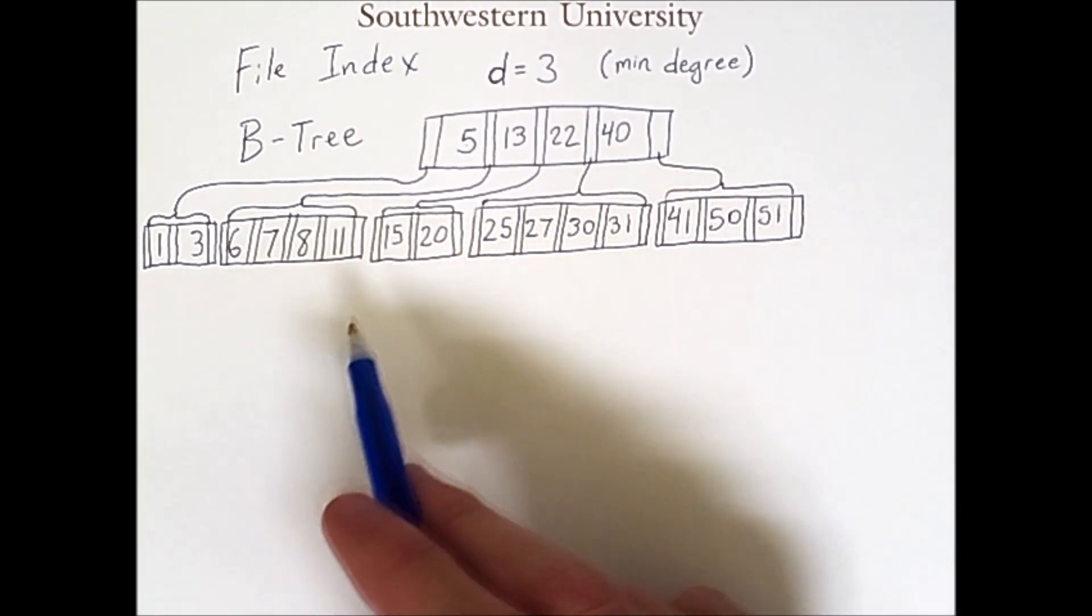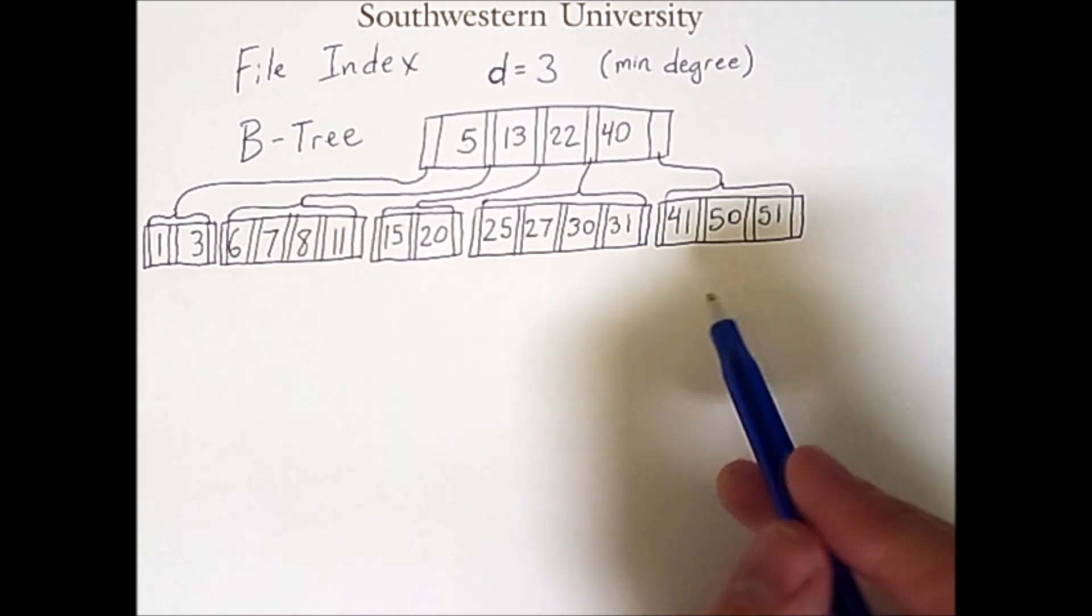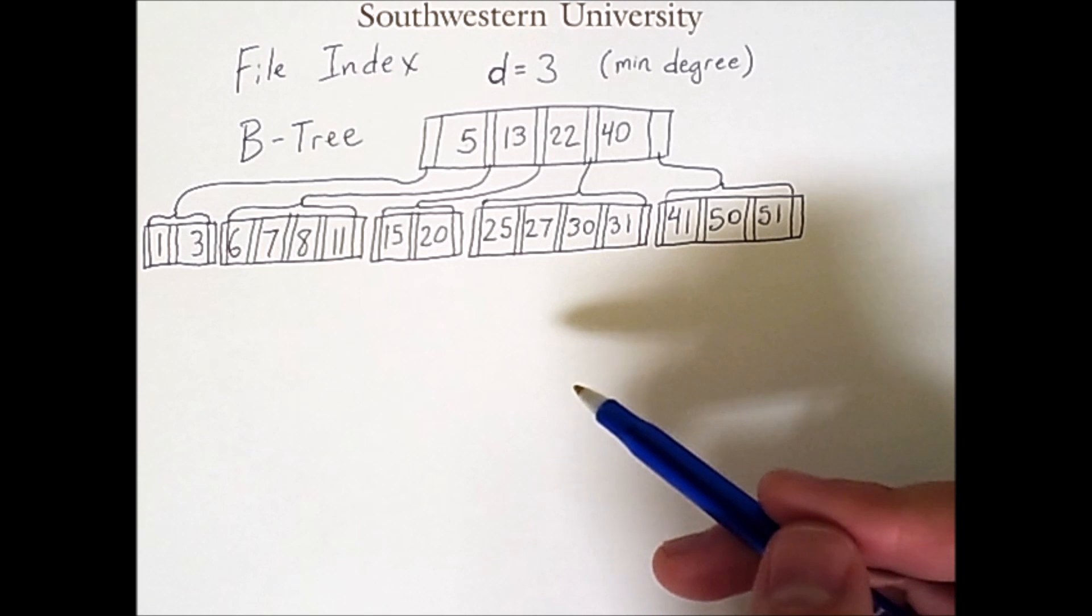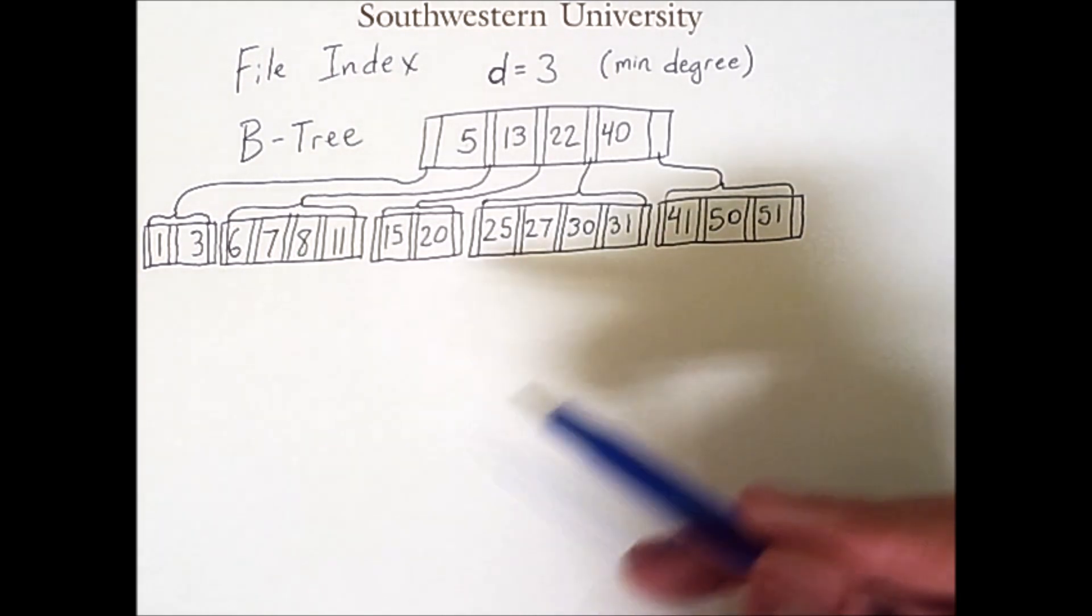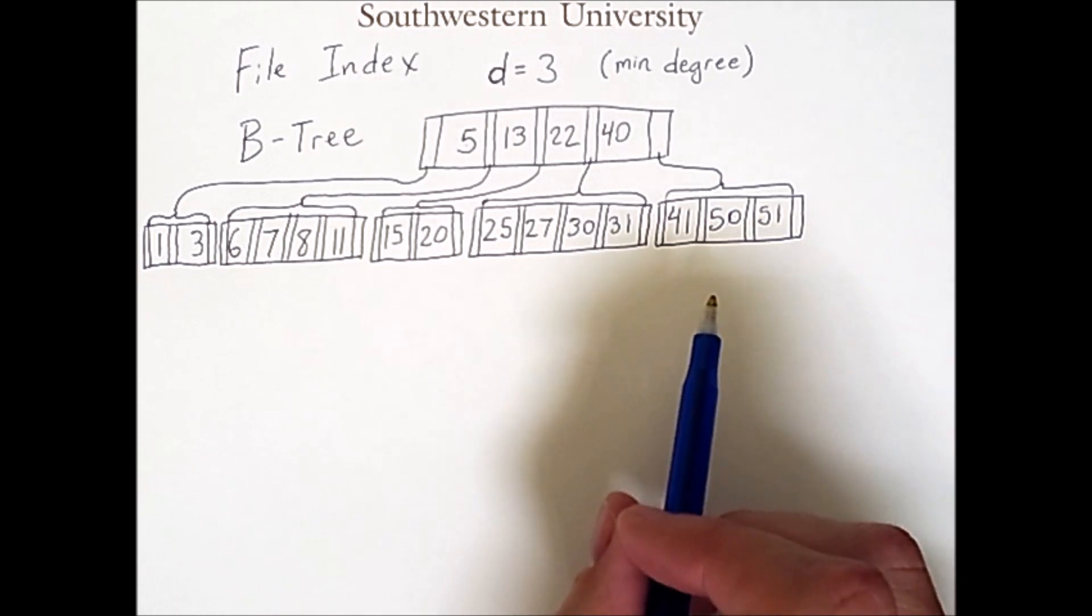But every other node has to obey these rules. Now, the nice thing about the B-tree is that all of the leaves appear at the same level. So we're going to add some values to this tree, and we're going to modify it as necessary, but we'll see that even as we modify values, all of the leaves will be at the same level.